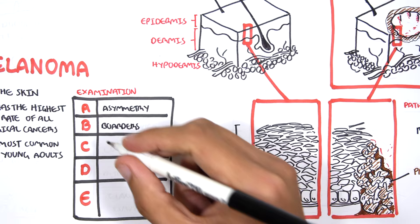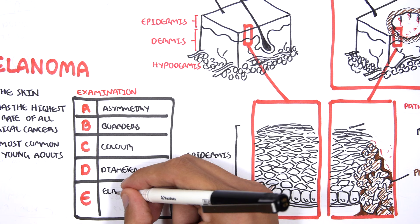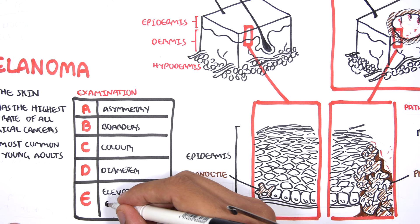So in A, we look for asymmetry. In B, we look for ill-defined borders. In C, we look for any color changes or even bleeding. In D, we check for the diameter and possibly the depth.